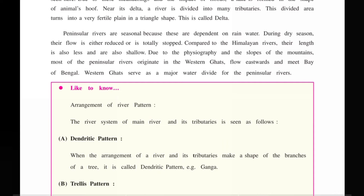Peninsular rivers are seasonal because they are dependent on rainwater. During dry seasons, the water is reduced and may stop completely. Compared to the Himalayan rivers, the peninsular rivers are shorter in length and a bit shallow due to their physiography and the slope of the mountains.